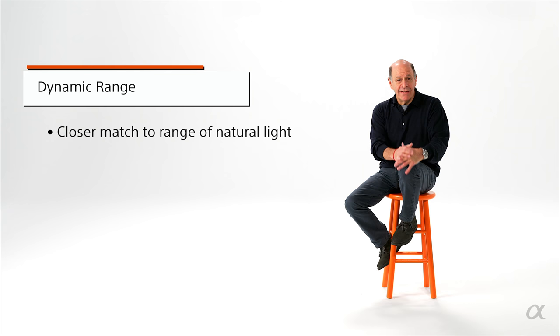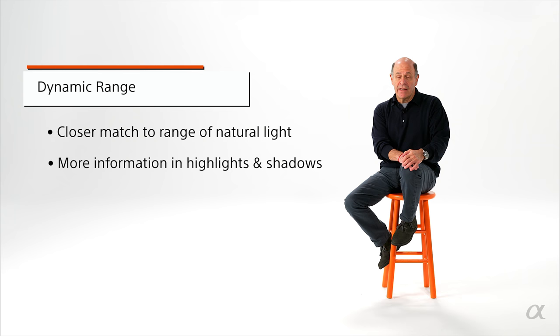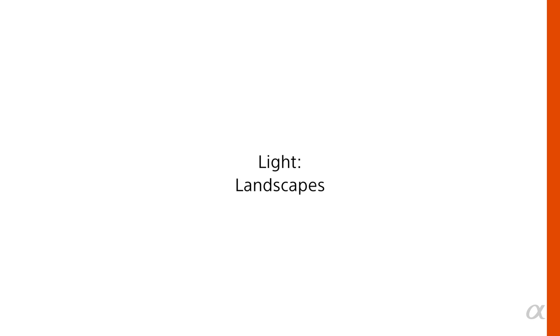It's important for me to have this dynamic range. There are some situations I shoot in where I'm controlling the light. But a lot of situations, if I'm shooting something in really natural light, I need that dynamic range. I need to be able to get information in highlights and get information in shadows. I believe the Sony cameras have 14-stop dynamic range, which is just phenomenal.